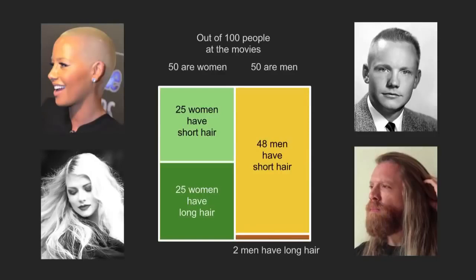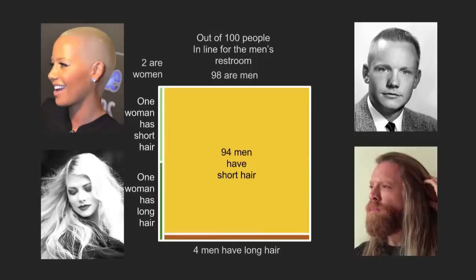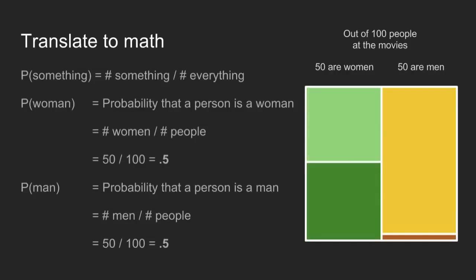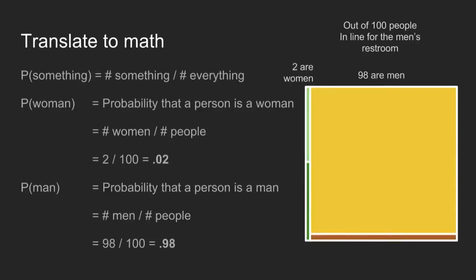To draw this a little differently: out of 100 people at the movies overall, we'll make the assumption explicit that 50 are women and 50 are men. The probability that a person is a woman is the total number of women divided by the total number of people — 50%, similarly for men. Moving to the men's restroom line, the probability that someone is a woman is 2%, and 98% for men.